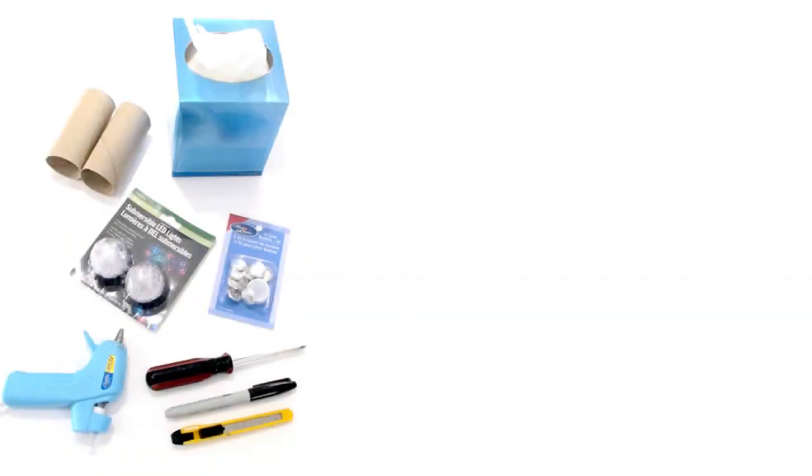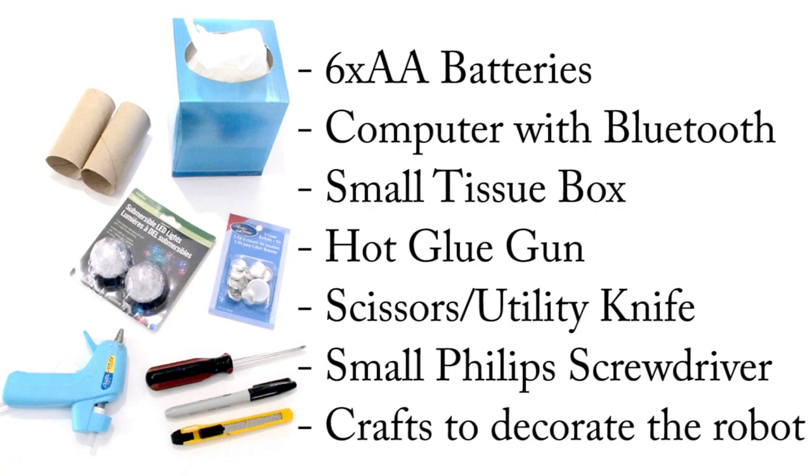To get started on your EasyBoxBot, you will need 6 AA fresh batteries, a Bluetooth enabled computer or a Bluetooth USB dongle for your computer, a small tissue box, a hobbyist hot glue gun and glue sticks, scissors or a utility knife, a small Phillips screwdriver, and some crafts to customize your robot.